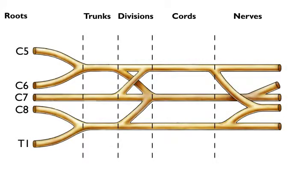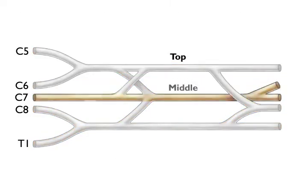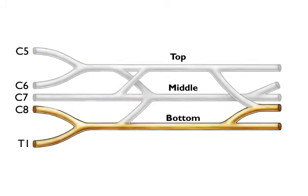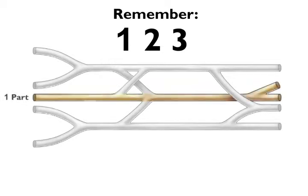Instead of remembering trunks, divisions, and cords, we can just think of the brachial plexus as composed of a top part, a middle part, and a bottom part. Then, remember 1, 2, 3. One individual part has 2 end nerves and 3 side nerves.